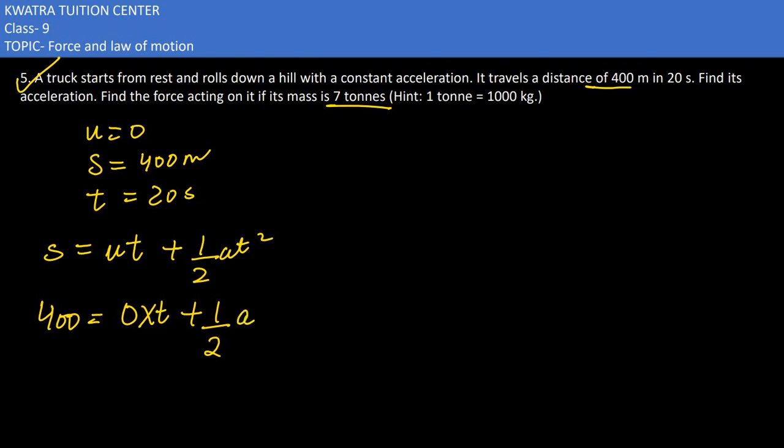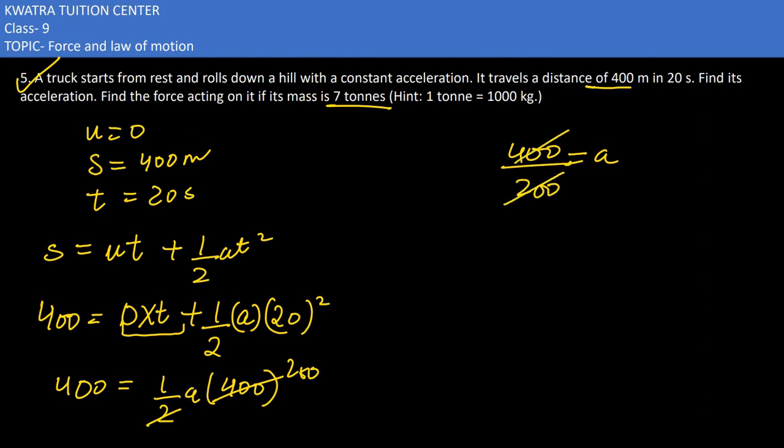Now 0 into t is 0. On the left side we have 400, on the right side we have half a into 20 squared, which is 400, so this becomes 200a. Now we have 400 equals 200a, so a would be 400 divided by 200, which gives you 2 meters per second squared.